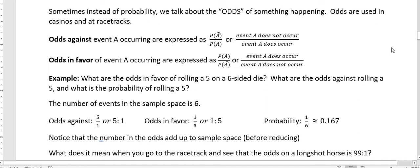But the odds against an event occurring is expressed as the probability that it doesn't occur over the probability that it does occur. So event A does not occur divided by event A does occur. Probability-wise, the odds in favor is the opposite. We put the event will happen over the event won't happen.